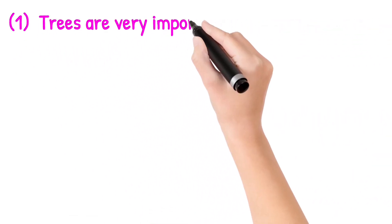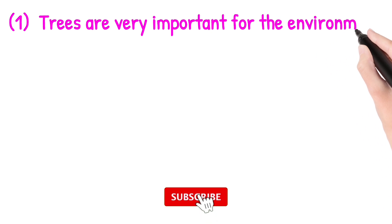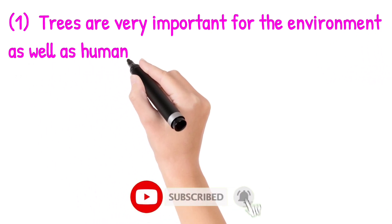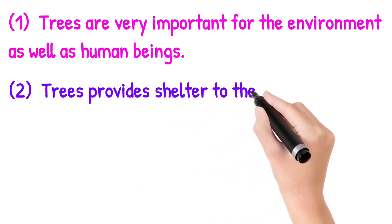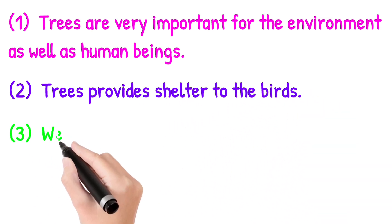First point: Trees are very important for the environment as well as human beings. Second point: Trees provide shelter to birds.